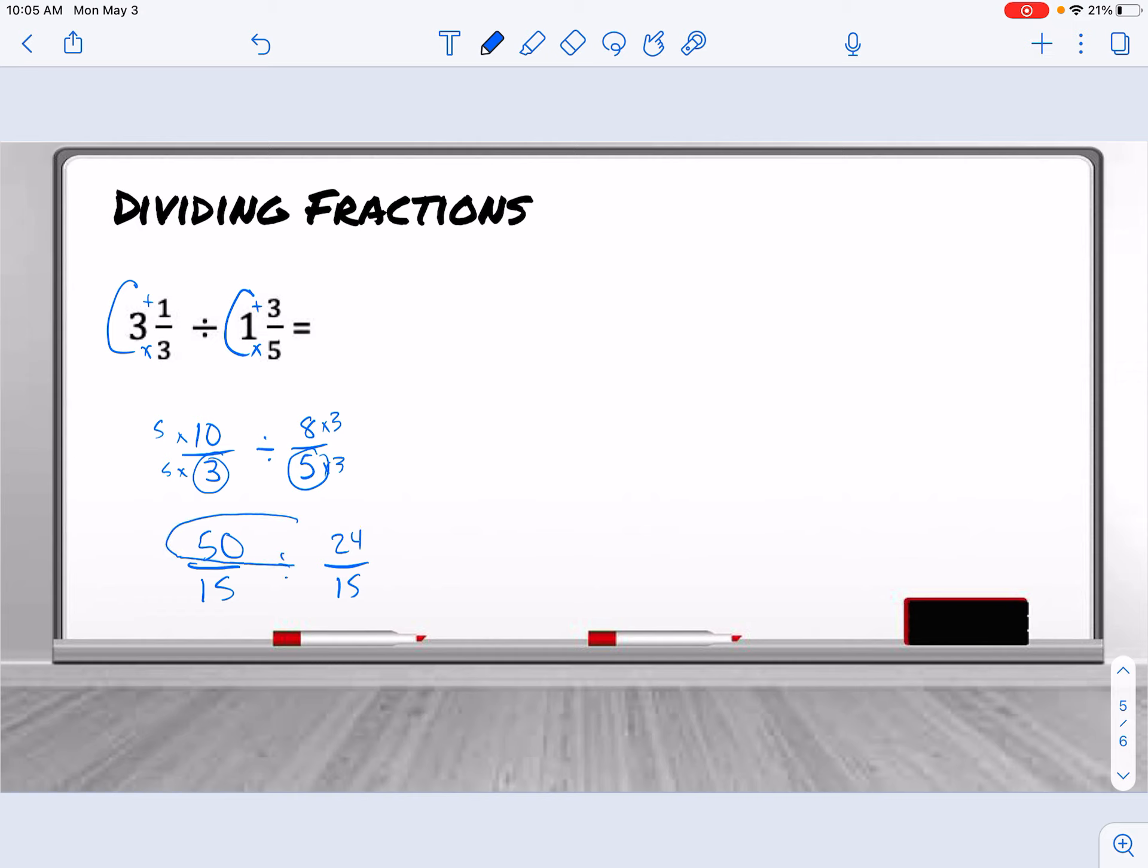And we're dividing the numerators. So it's 50 over 24, which is the same as 50 divided by 24. It goes in there twice. 2 times 24 is 48. So we have 2 left. So now we're going to make our fraction. We put the remainder on top, what we're dividing by on bottom. And then since both of our numbers are even, we can reduce it by 2.